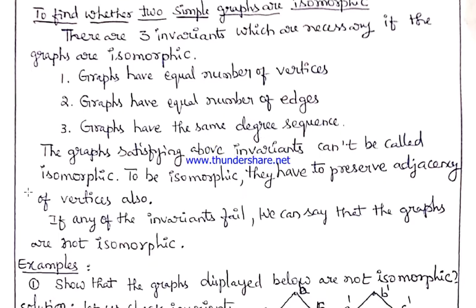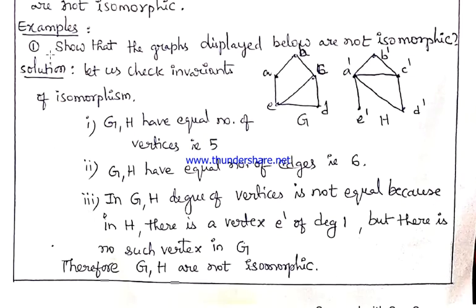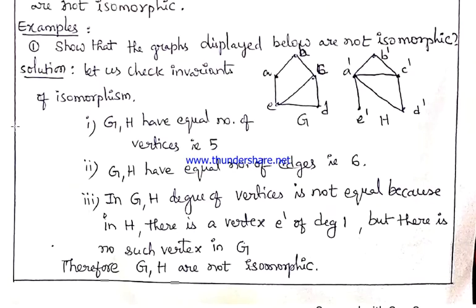Let us consider a few examples. First example: show that the graphs displayed below are not isomorphic. Since we are going to prove that the graphs are not isomorphic, we confirm ourselves to checking the three invariants. It can be clearly viewed from the two graphs that they have the same number of vertices — 5. Also, they have the same number of edges — 6. The first two invariants are satisfied.